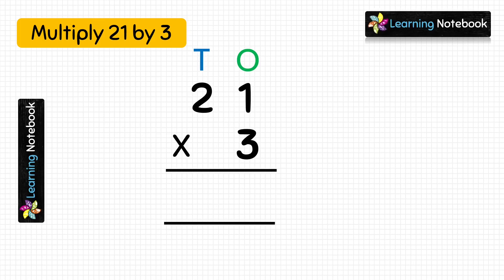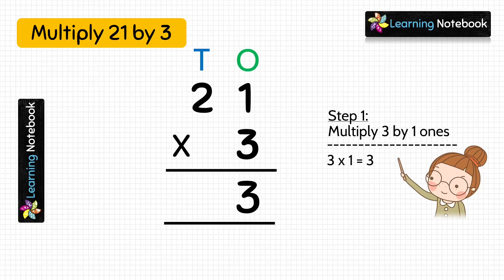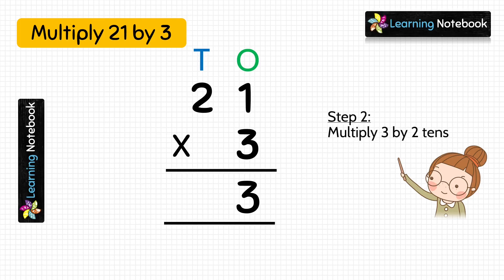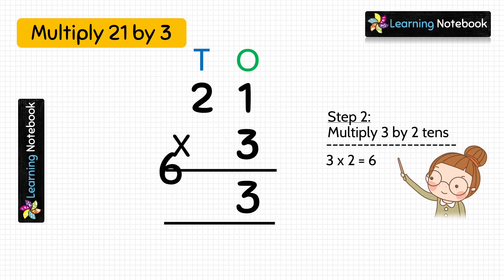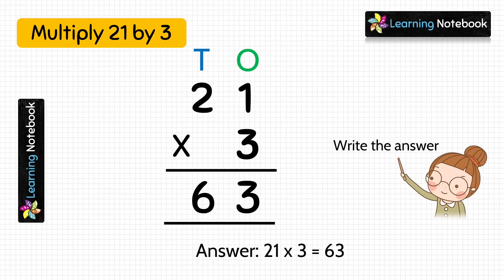Now we will multiply them in two steps. In step 1, we will multiply 3 by 1. So 3 into 1 equals to 3. We will write 3 at the 1's place in the answer. Now in step 2, we will multiply 3 by 2. 3 into 2 equals to 6. So let's write 6 at the 10's place in the answer. Students, we have got the answer as 63.